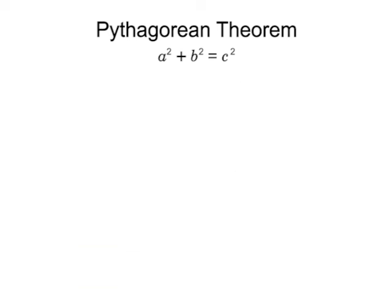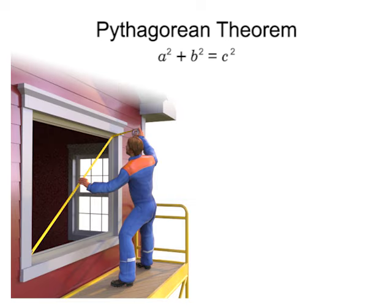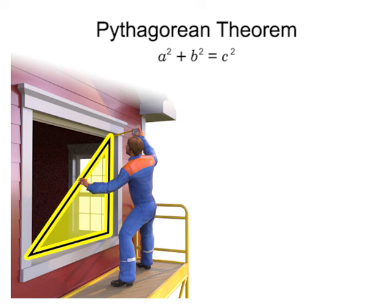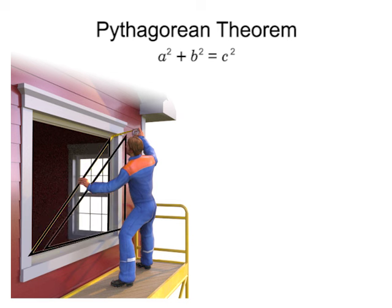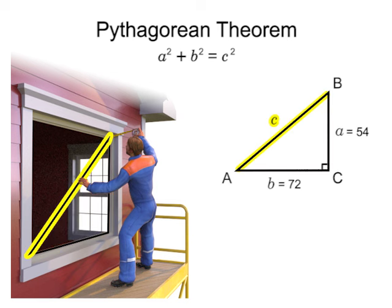Here's a good example of the benefit of the Pythagorean Theorem. A carpenter is installing new windows in a home. The windows measure 54 inches by 72 inches. The carpenter wants to ensure that the windows are square before securing them in place. To do so, he'll need to measure the diagonal of the window to confirm that it is the right distance and that the window is square. What should the diagonal measure?